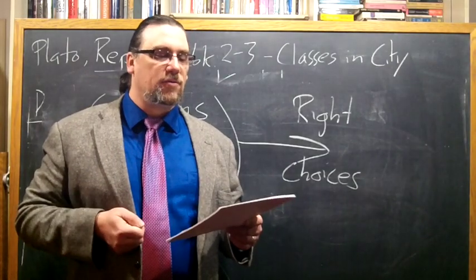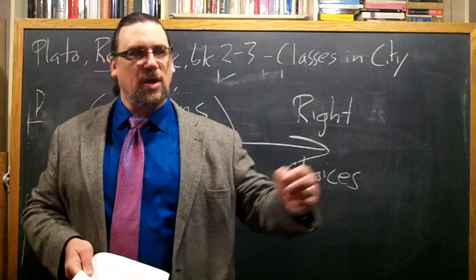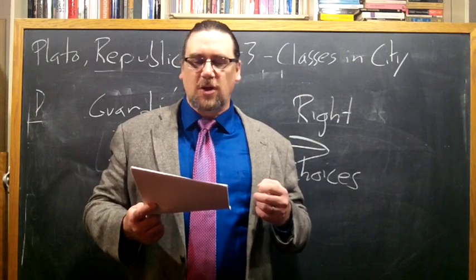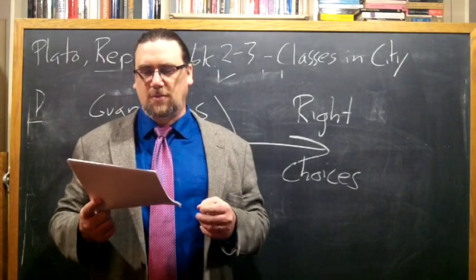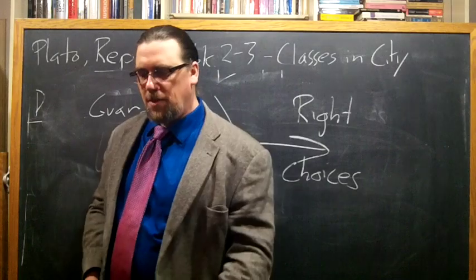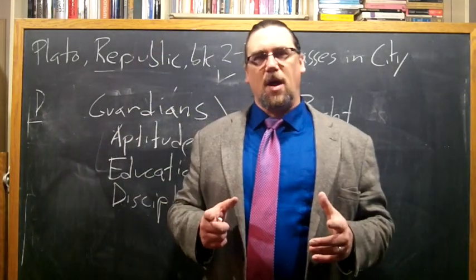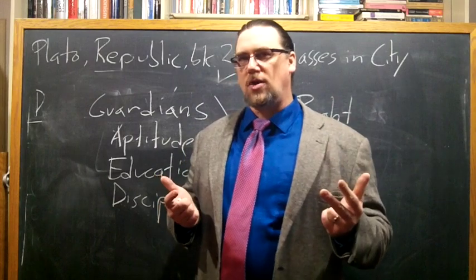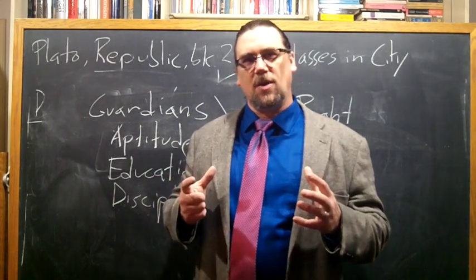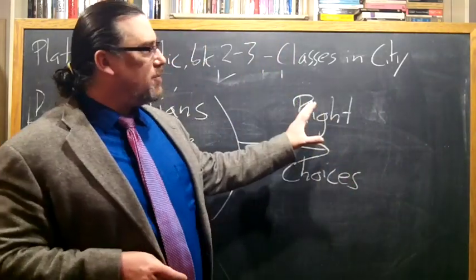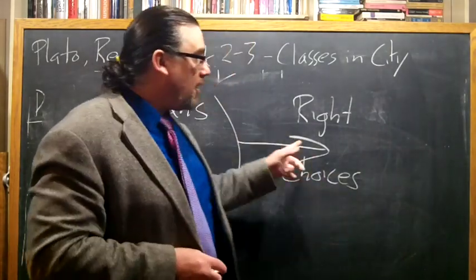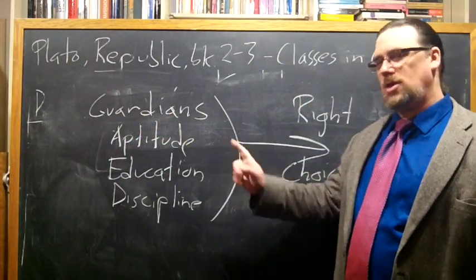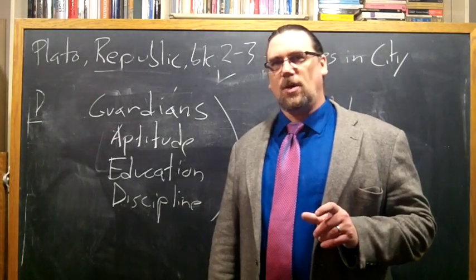He says, well, this deprivation of the truth is either caused by theft or force or enchantment. I mean that some men are changed by persuasion. Some forget. Argument steals away the hearts of one class and time the other. And this I call theft. Something is stealing away the truth. Making the right choices is dependent on preserving the truth. Those who are forced are those who the violence of some pain or grief compels to change their opinion. You would also acknowledge that the enchanted are those who change their minds under the softer influence of pleasure, or the sterner influence of fear. So, who do we want? We want the people who are not going to be affected by pain, pleasure, desire, fear, other people's pressure, culture. We want people who are going to stick with the truth and cleave to that good so that they can make the right choices throughout the course of their life. And we have to observe them to see who is actually able to do this. Because we can't predict, just on the basis of aptitude, education, and discipline, that everybody is going to, in fact, succeed.